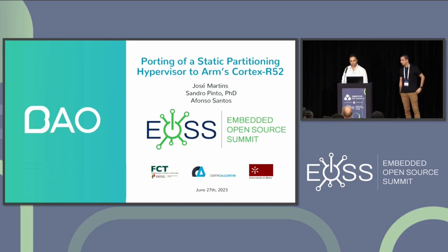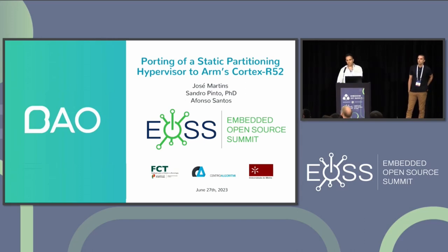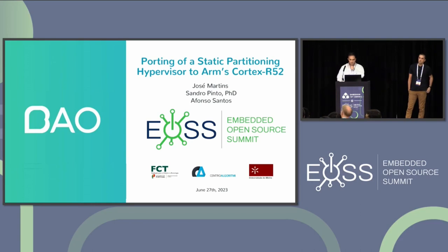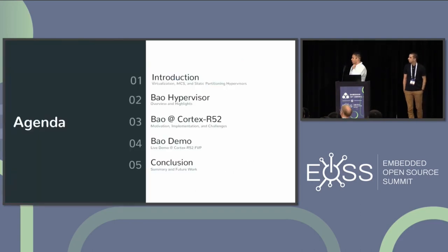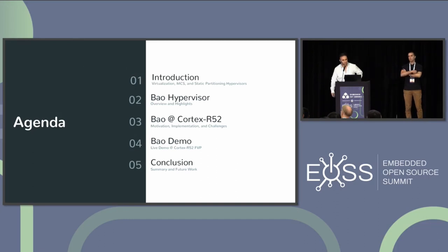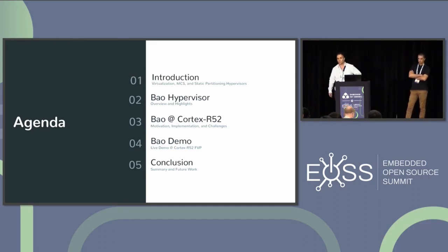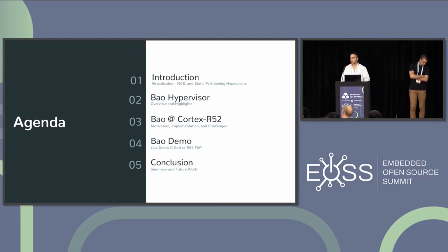The title of the talk is Porting a Static Partitioning Hypervisor to ARM's Cortex-R52. And this static partitioning hypervisor is BAU. The agenda for today: I will start with a brief introduction to provide some background about virtualization, mixed criticality systems and IoT, and the rise of static partitioning hypervisors.